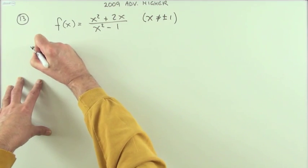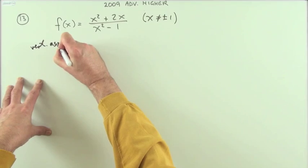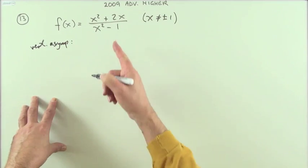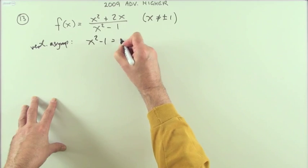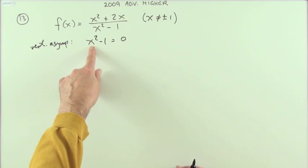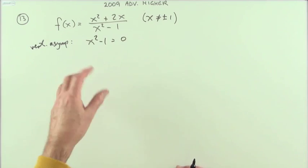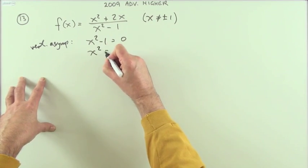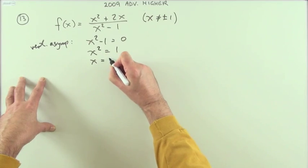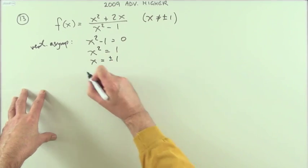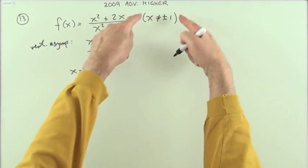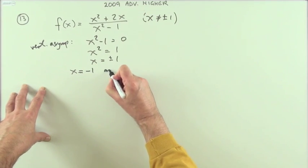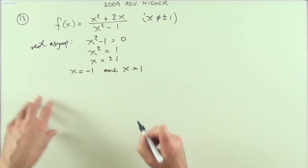So what have we got? Vertical asymptotes: you'll get vertical asymptotes when the denominator x² - 1 equals 0. You can solve that either way, there's only one mention of x. We'll just take that across, x² = 1, so x = ±1, better state them separately. So the vertical asymptotes are x = -1 and x = 1.